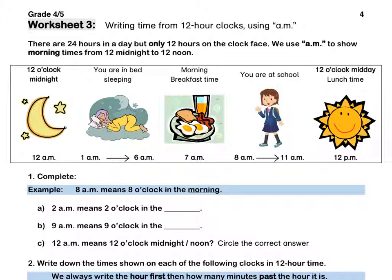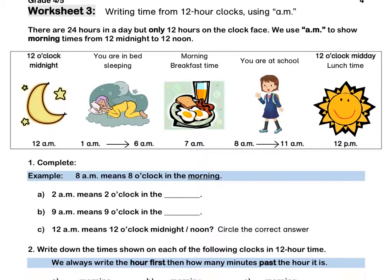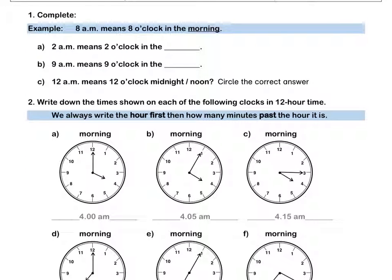This is 12 PM because afternoon time has started. Let's look at question 1. 8 AM means 8 o'clock in the morning. For C, 12 AM means 12 o'clock midnight. AM means morning time so it is 12 o'clock midnight. The new day has just started. Pause this video to complete question 1.